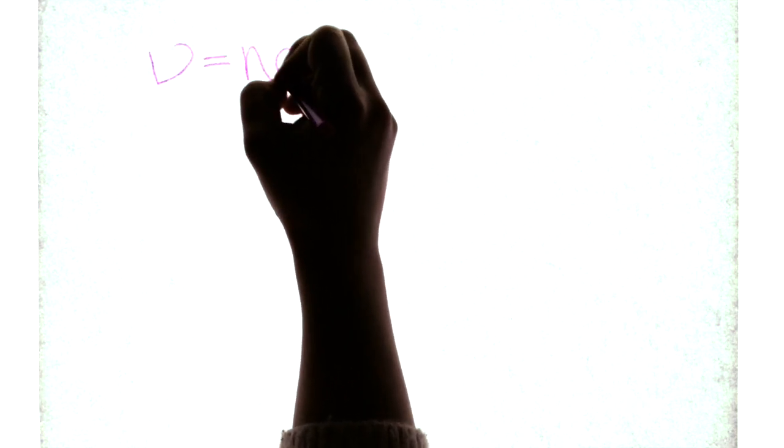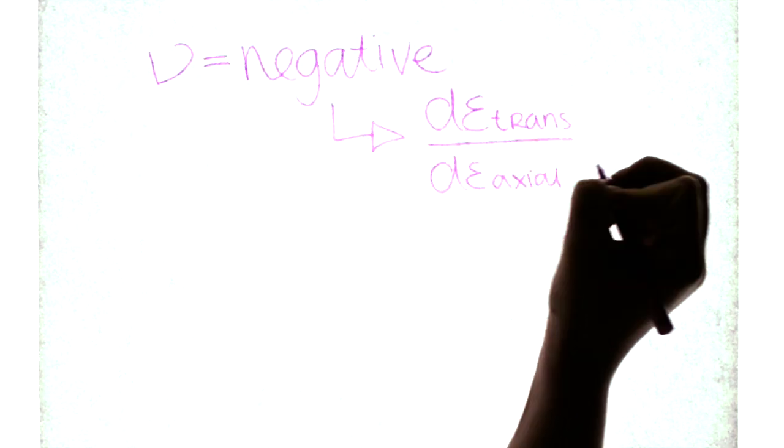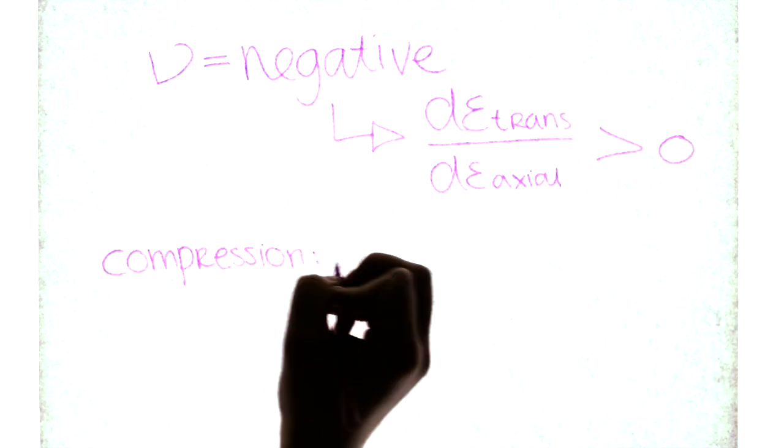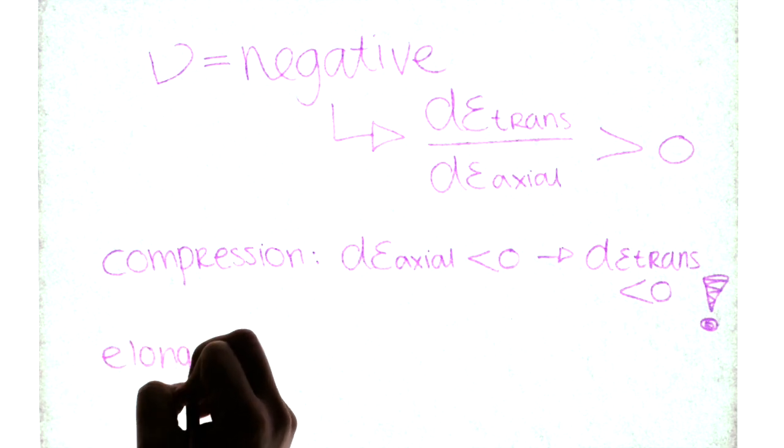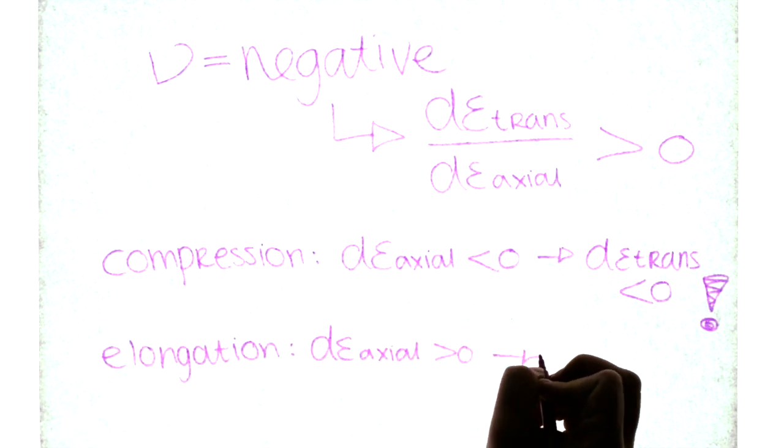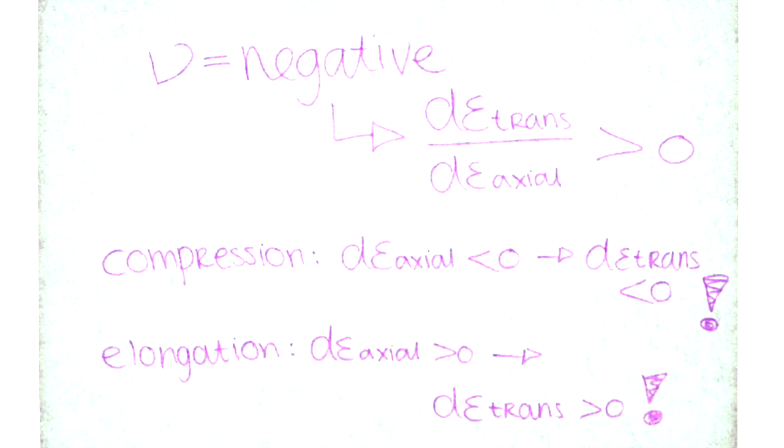This means that for a negative Poisson ratio, the ratio of the two strains should be positive. Hence, if the material is being compressed, it would contract in the direction perpendicular to the compression. Or, it would expand if this compression is negative, and the material is thus being elongated.